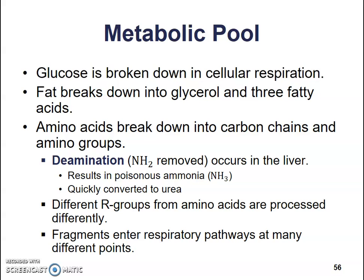Amino acids break down into carbon chains and amino groups. De-amination, when NH₂ is removed, occurs in the liver. It results in poisonous ammonia, which is quickly converted to urea that our bodies can then get rid of in urine. Different R groups from amino acids are processed differently, depending on what type of amino acids are used in that protein.